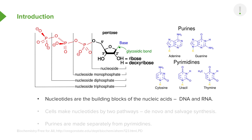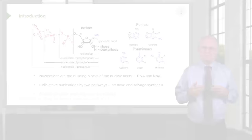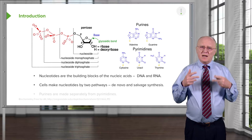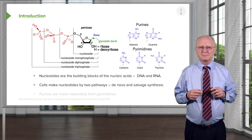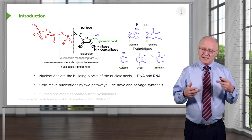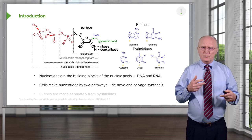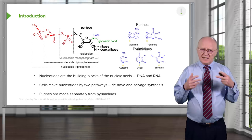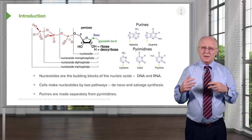Nucleotides are the building blocks of the nucleic acids, DNA and RNA. Cells make their nucleotides by two distinct pathways. One pathway is called the de novo pathway, meaning those nucleotides are made completely from scratch from very simple compounds. The other strategy is salvage synthesis, meaning nucleotides are made by using pieces of other nucleotides that have been broken down. Purines are made in a distinct pathway, distinguished from the pathway used to make pyrimidines, so we'll talk about them separately.